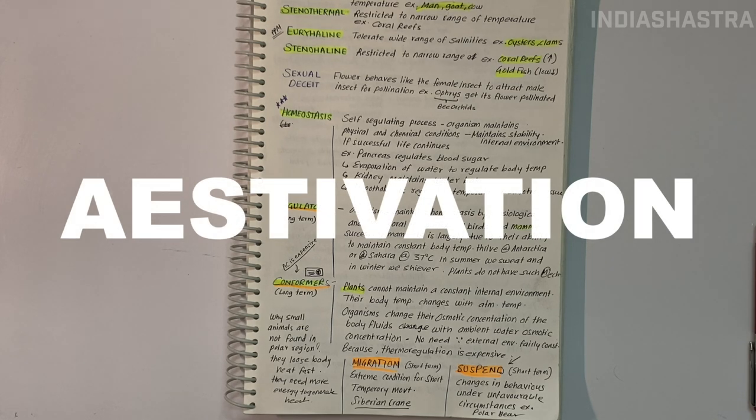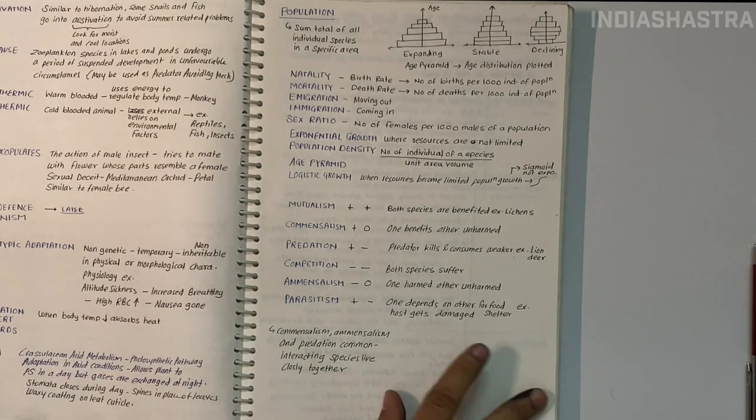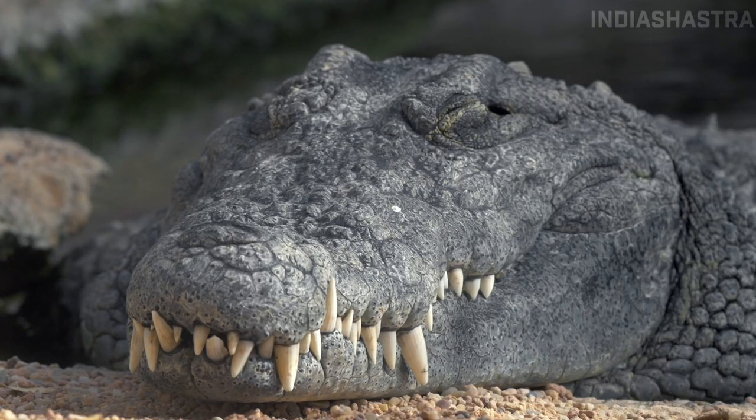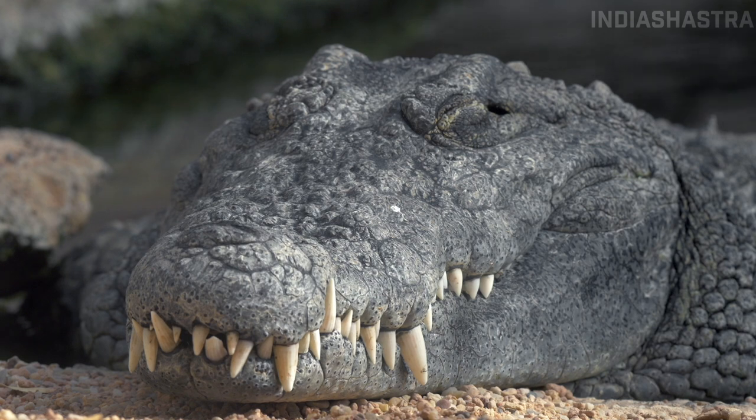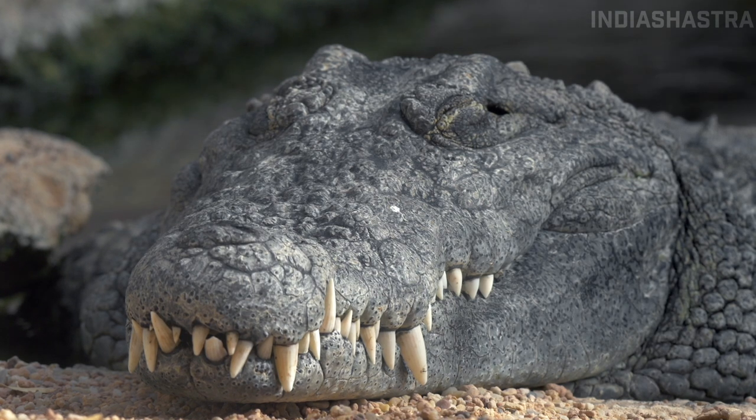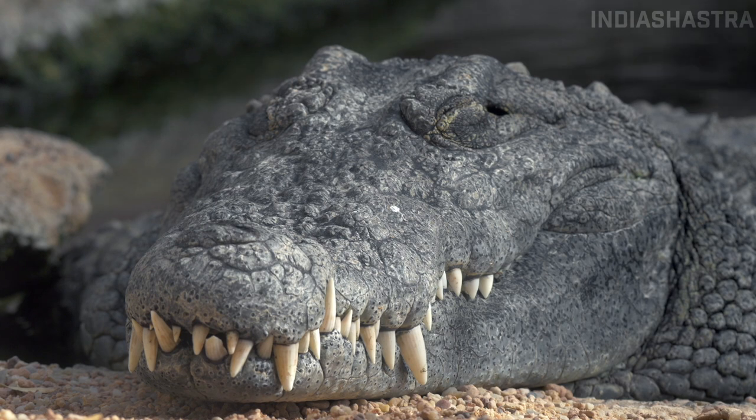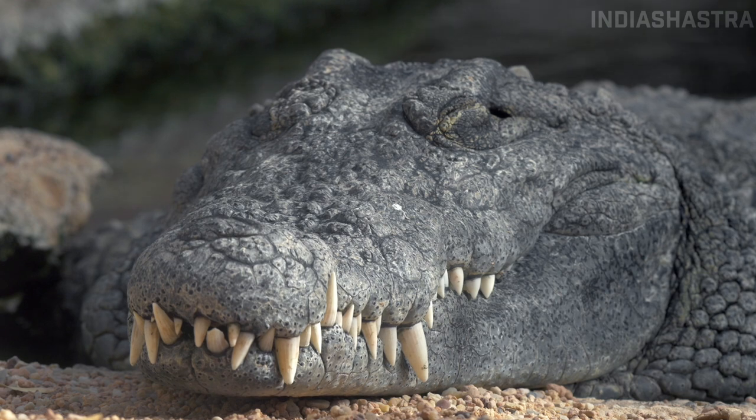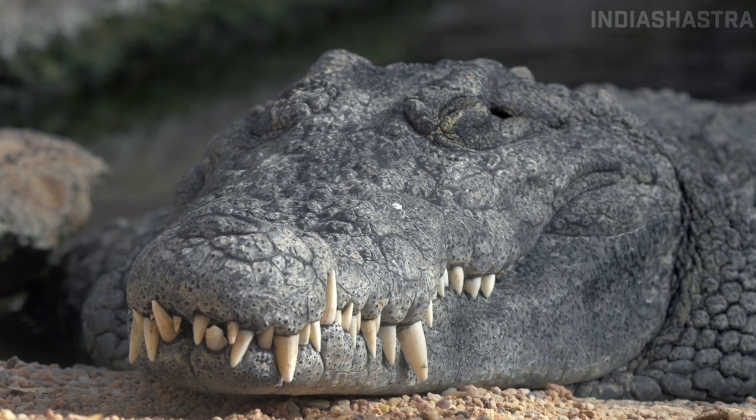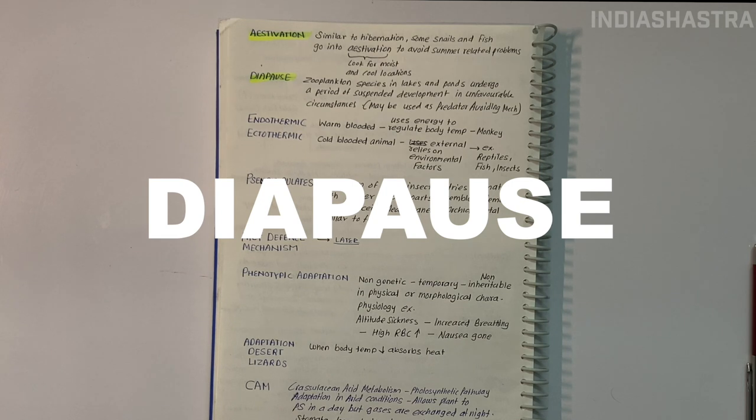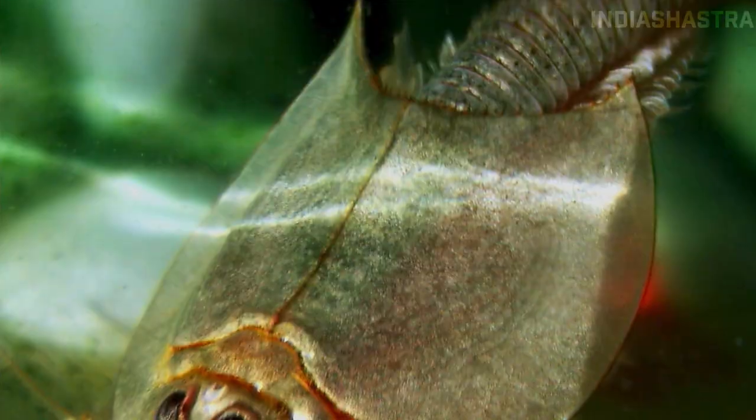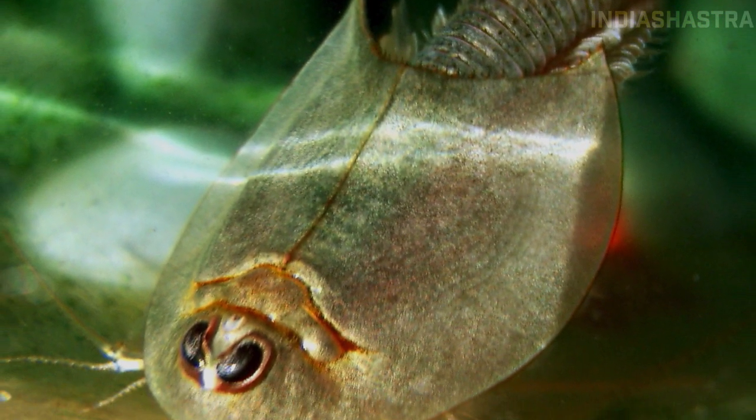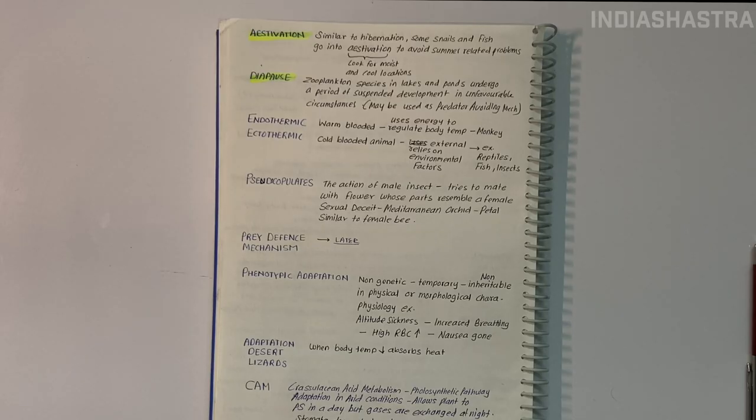Estivation is similar - species like earthworms, frogs, snails, salamanders and crocodiles in warm tropical latitudes survive harsh summers by finding moist shady places to suspend and avoid heat. This is summer sleep. Diapause is a period of suspended development in insects or other vertebrate or mammal embryos during unfavorable environmental conditions.